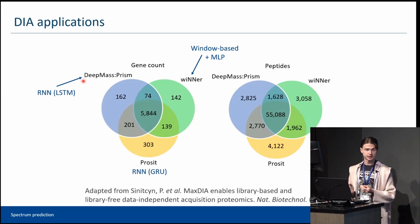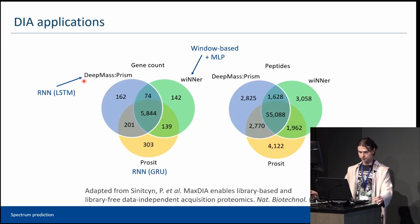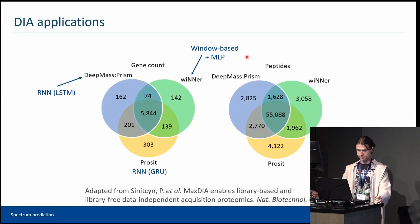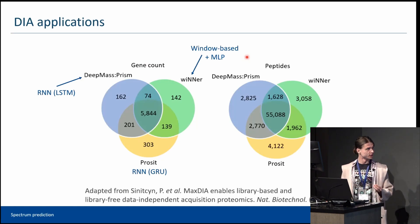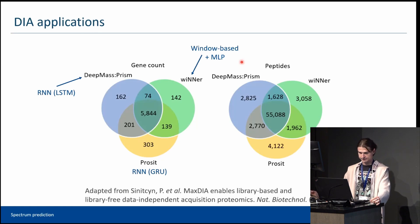This suggests that faster approaches that require less training data can also be used to process DIA data. These qualities make Wiener ideal for capturing project-specific conditions, such as non-standard proteases, fragmentation energies, or other exceptional circumstances in fragmentation.